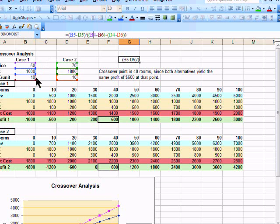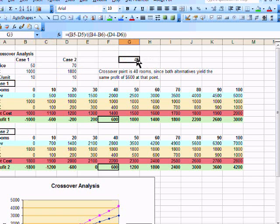and we've subtracted the contribution margin for case two, which as we talked about earlier, is our price minus our variable cost for the first case, and our price minus the variable cost for the second case. And then it simply gives us the answer, it tells us what that crossover point is.